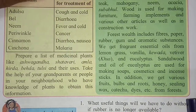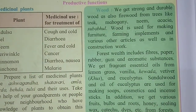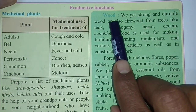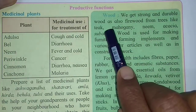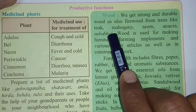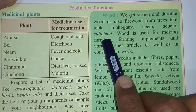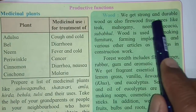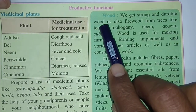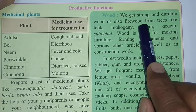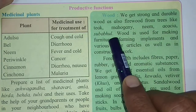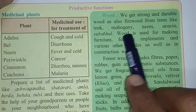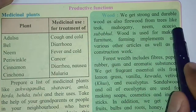The next productive function is that we obtain wood — we get strong and durable wood as well as firewood from trees like teak, mahogany, neem, acacia, and subabul. From all these big trees we get two types of wood: number one, strong and durable wood for making furniture and many more things; and firewood — wood for burning — from these trees.